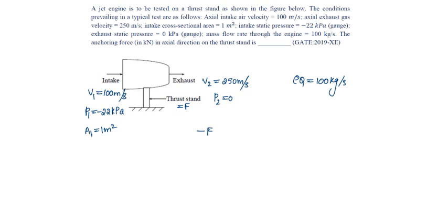Minus F in the opposite direction plus pressure into area will be force P1 into A1 plus P2 into A2 in the same direction, will be equal to Rho Q into V2 minus V1.